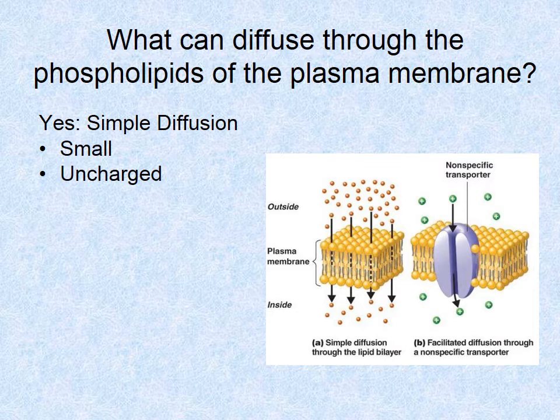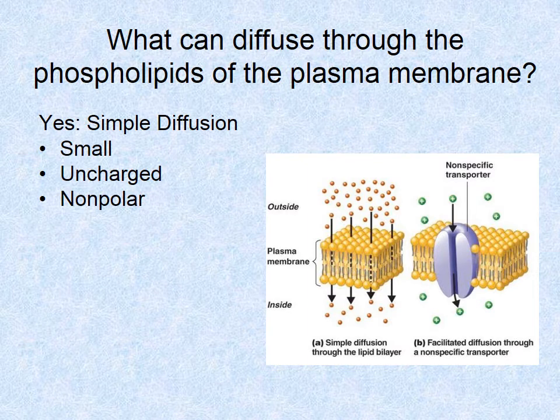Molecules must also be uncharged — no negative or positive charge — meaning ions cannot simple diffuse, and polar molecules cannot either. Water is its own situation: water is polar but is able to move through osmosis, which is simple diffusion. Other large polar molecules cannot. Non-polar molecules can simple diffuse. Examples: O2 and CO2 — these are small molecules, uncharged, and non-polar.